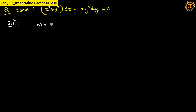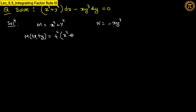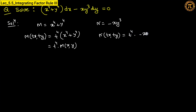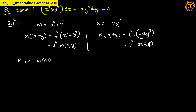Here M equals x⁴ + y⁴ and N equals −xy³. For M: substituting tx and ty gives t⁴(x⁴ + y⁴) = t⁴ M(x, y), so M is homogeneous of degree 4. For N: substituting gives t⁴(−xy³) = t⁴ N(x, y), so N is also homogeneous of degree 4. Both M and N are homogeneous with the same degree.